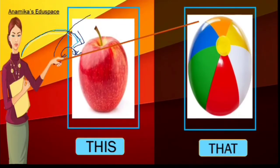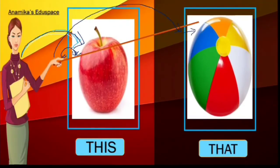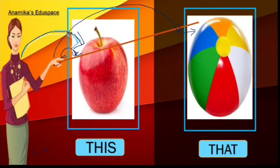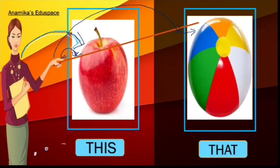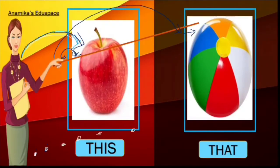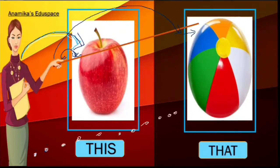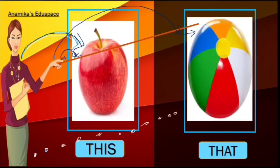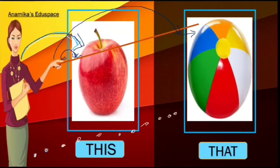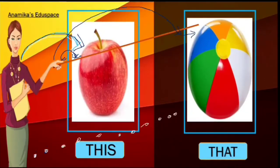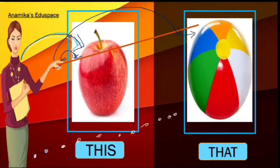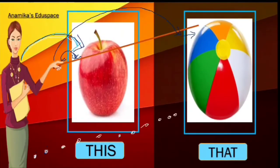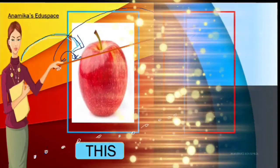But the ball is present far away from Miss Rosie. Miss Rosie has to walk from here and get to the ball. Miss Rosie needs to hold a long stick to touch the ball, and a short stick to touch the apple. So, this is an apple. That is a car. This is a car — T-H-I-S.